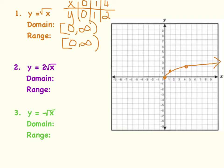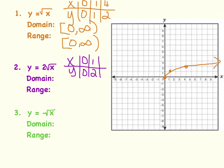Now let's graph y equals 2 times the square root of x. I'll make a table. If x is 0, the square root of 0 is 0, and 0 times 2 is 0, so y is 0. If x is 1, the square root of 1 is 1, and 1 times 2 is 2, so y is 2. If x is 4, the square root of 4 is 2, and 2 times 2 is 4, so y is 4. Let's plot those points: (0,0), (1,2), and (4,4).